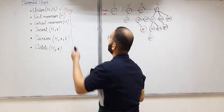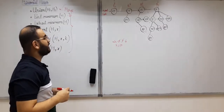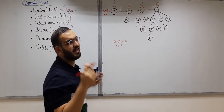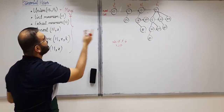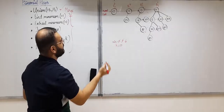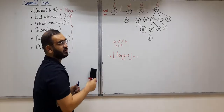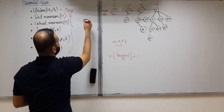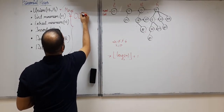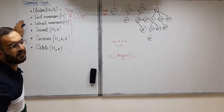To find the minimum element in a binomial heap, you just need to traverse the entire root list. The length of the root list, for a heap with n nodes, is at most O(log n). Therefore, the time complexity of the find minimum operation is O(log n) in the worst case.